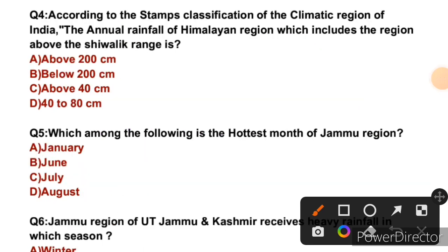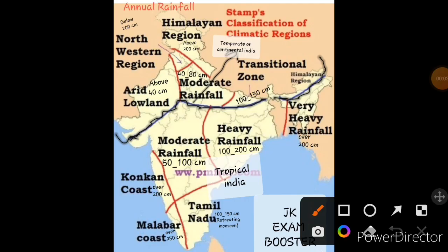Question 4: According to Stamper's classification of the climatic regions of India, the annual rainfall of the Himalayan region — which includes the region above the Shivalik ranges — is approximately how much? The right answer is E: about 200 cm. This relates to Stamper's classification of climatic regions. For more detailed understanding of weather and climate of Jammu and Kashmir, please refer to the full lecture available in the playlist.